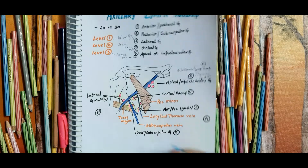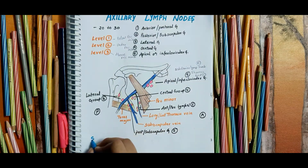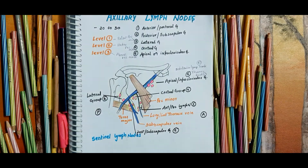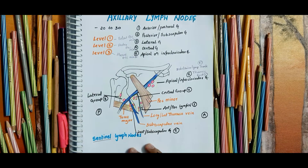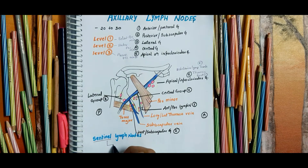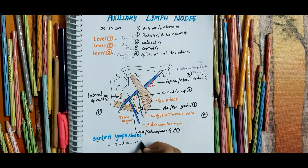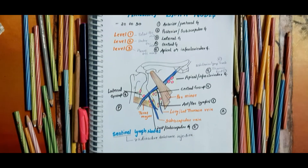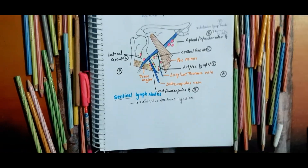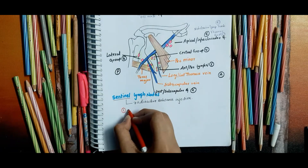The lymph nodes that first receive lymph from the area of the breast involved in breast cancer are termed sentinel lymph nodes. The sentinel lymph nodes are confirmed by injecting a radioactive substance into the affected area of the breast.